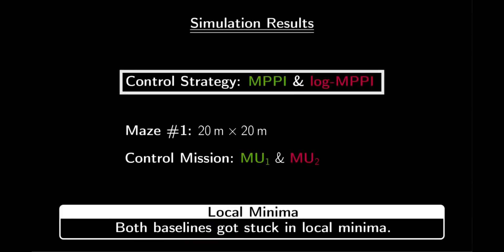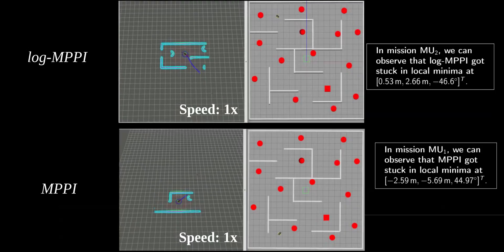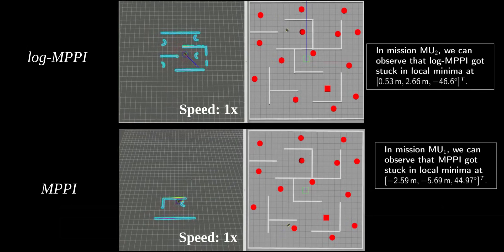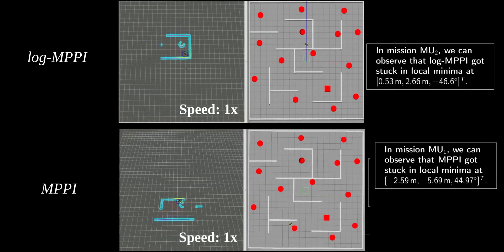The next simulations show the performance of the vanilla MPPI and log MPPI in a given maze-like environment. We can see that both control methods were unable to complete any of the assigned control missions due to the challenging environmental conditions.